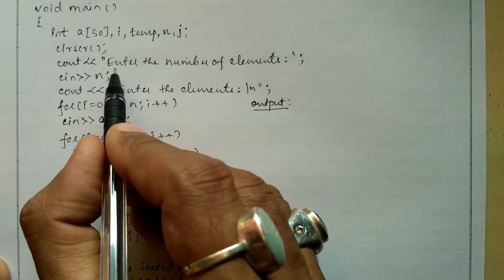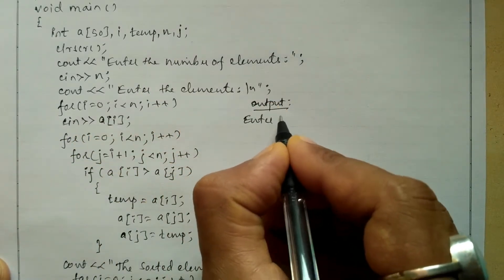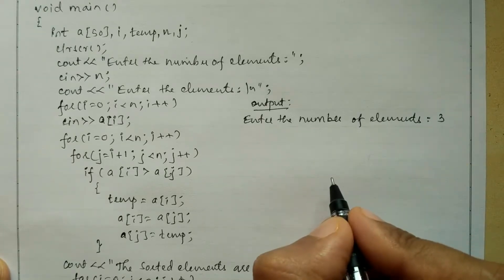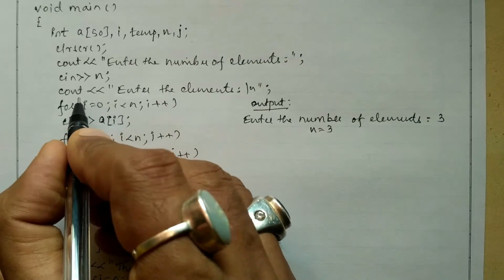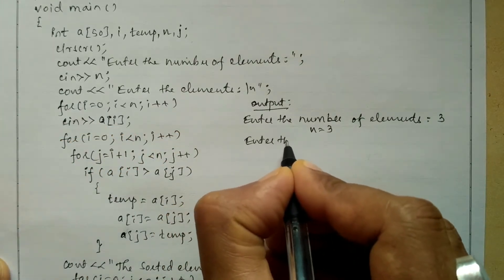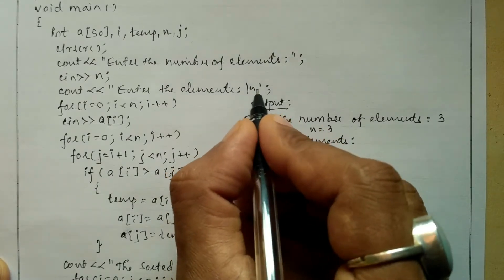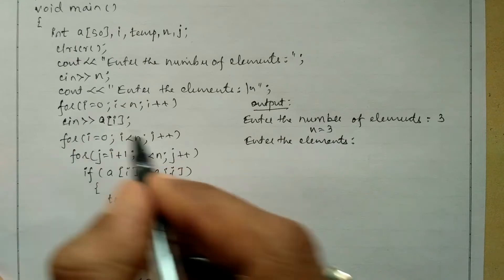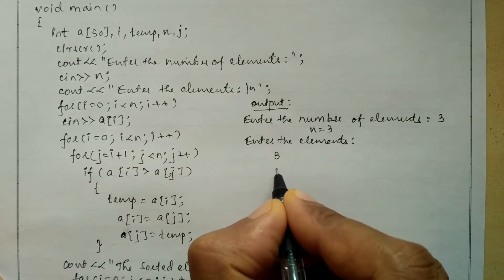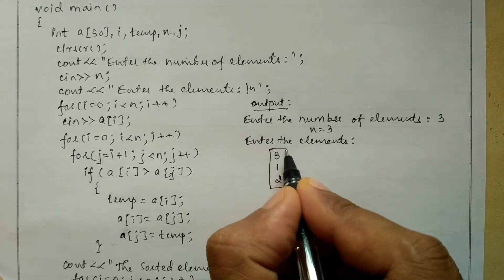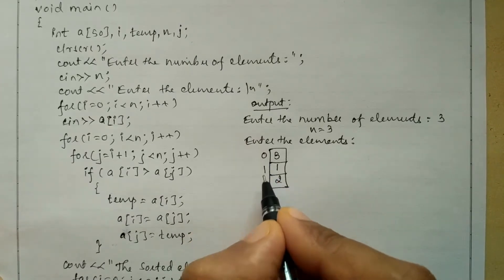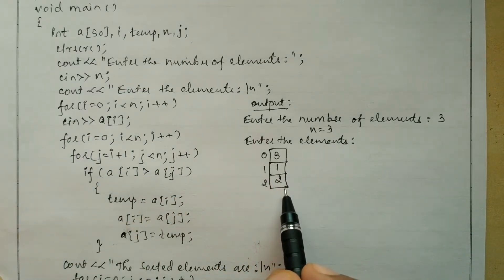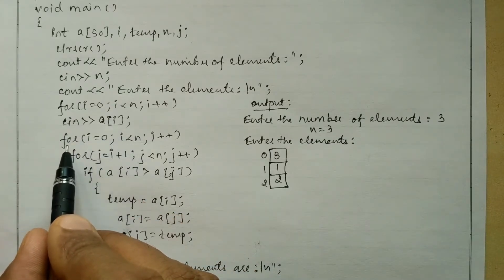Let us take an example. Once we compile and run this program it will ask the user to enter the number of elements. For example, we enter 3, so n holds the value 3. Next, it asks the user to enter the elements. We enter 3, 1, and 2. These are mapped in memory as three consecutive blocks with index numbers 0, 1, and 2, holding values 3, 1, and 2 respectively.